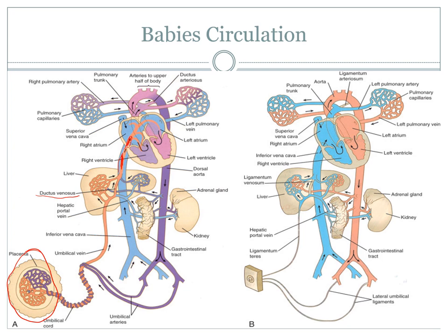The oxygenated blood goes straight from the placenta into the inferior vena cava and then to the heart. Since the baby isn't getting oxygen from the lungs, it doesn't need to utilize the lungs until born. We have two shunts available during fetal development. The first is the foramen ovale, which is a hole between the left and right atrium. Blood will mix straight through to the left atrium into the left ventricle to be pumped around the body. For any blood going towards the lungs, we have the ductus arteriosus, which bypasses the lungs and puts blood directly into the descending aorta to travel around the body.